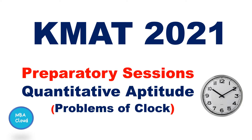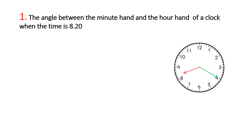We will talk about the shortcut methods in this video. Here, the question is: what is the angle between the minute hand and hour hand of a clock when the time is 8:20?